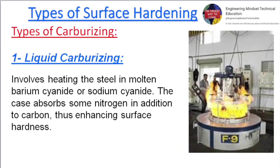Types of carburizing. 1. Liquid carburizing: involves heating the steel in molten barium cyanide or sodium cyanide. The case absorbs some nitrogen in addition to carbon, thus enhancing surface hardness.